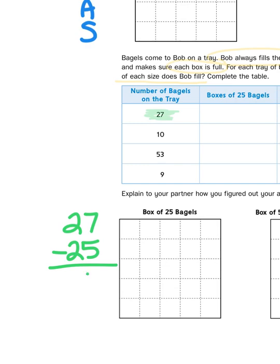7 minus 5 is 2. 2 minus 2 is 0. So that leaves me with 2 extra. So this box of 25 can be filled with 25 bagels. Okay? So I'm just going to start filling it with bagels.